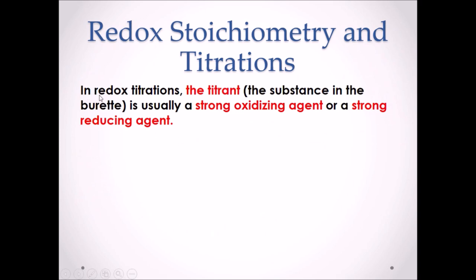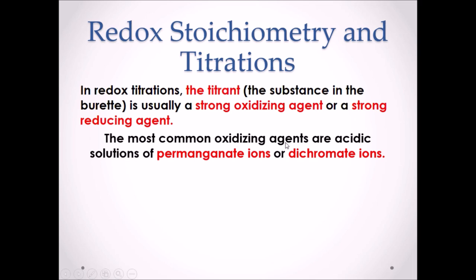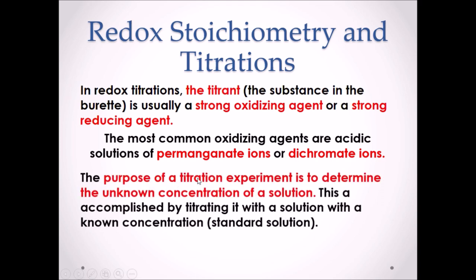In redox titrations, the titrant, the substance in the burette, is usually a strong oxidizing agent or a strong reducing agent. The most common oxidizing agents are acidic solutions of permanganate ions or dichromate ions. The purpose of a titration experiment is to determine the unknown concentration of a solution. This is accomplished by titrating it with a solution with a known concentration, also known as a standard solution.